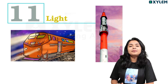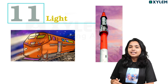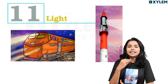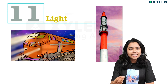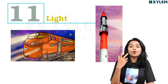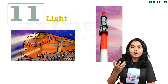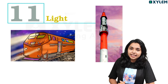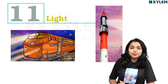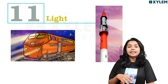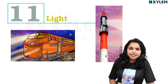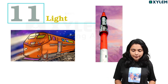In this chapter, I am going to tell you about light — concave mirror, convex mirror, concave lens, and convex lens. We are going to discuss some of the properties of light.